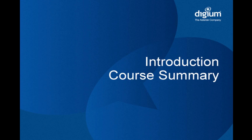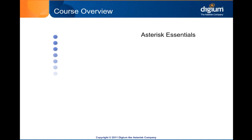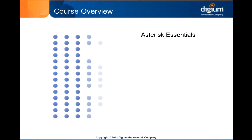Before we get into the training videos that make up this course, we want to take just a few moments to talk about the format of the course, and to make sure you know how to get the most out of this training. Asterisk Essentials includes 14 chapters with about 5 modules in each one. Some modules are just a few minutes long, and the longest is still less than 15 minutes. We've tried to present each chapter concisely enough that you can take the content in a single sitting, but thoroughly enough that it's a good investment of time.